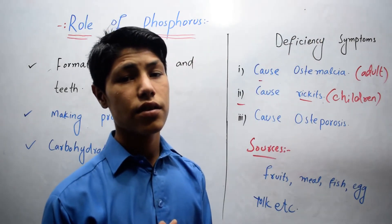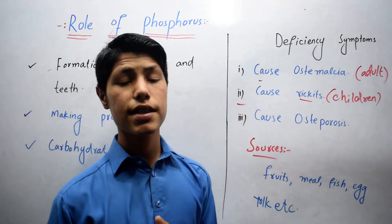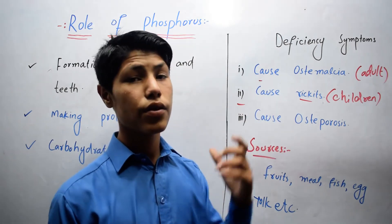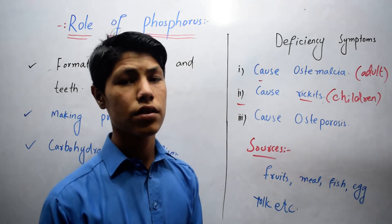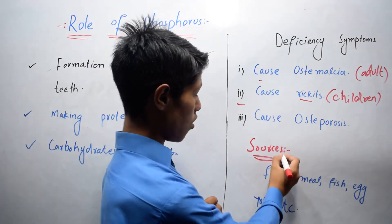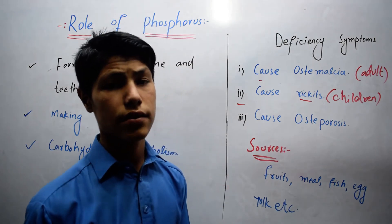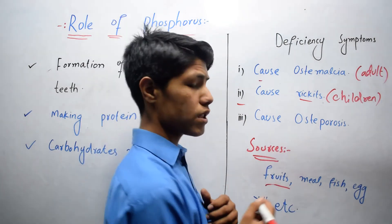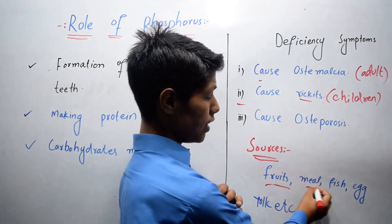Now this was all about the deficiency symptoms of phosphorus. Now let's come to the sources of phosphorus: fruits, meat,